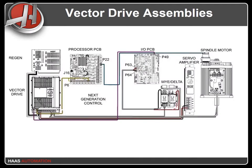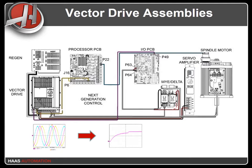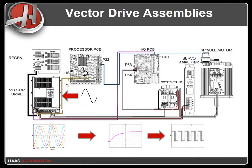This is a simplified diagram of a typical Haas spindle system. The Vector Drive takes three-phase power from the main transformer. The AC power is rectified and converted into a DC bus. A typical DC bus should range between 320 and 350 volts DC. When the program or operator commands spindle speed, the controller sends command signals to the drive that represent the current needed to achieve the programmed spindle velocity. The drive generates PWM power based on the command signals and feeds the motor.